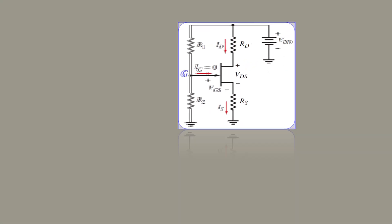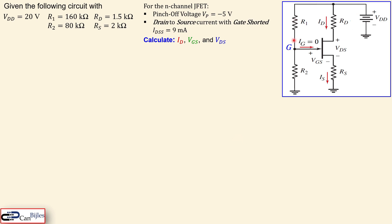We will work out the calculations step by step and verify everything in SPICE simulations. Our example circuit has four resistors R1, R2, RD, and RS, with values as shown, and a DC voltage source VDD of 20 volts. For this n-channel JFET, the pinch-off voltage VP (also called the threshold voltage) is minus 5 volts. The drain-to-source current with gate shorted, IDSS, is 9 milliamps — this is also the maximum current this JFET can supply.